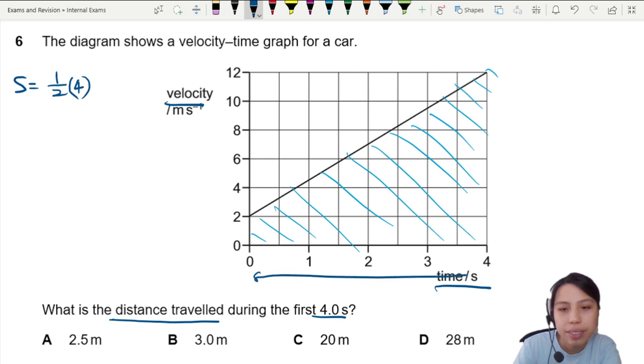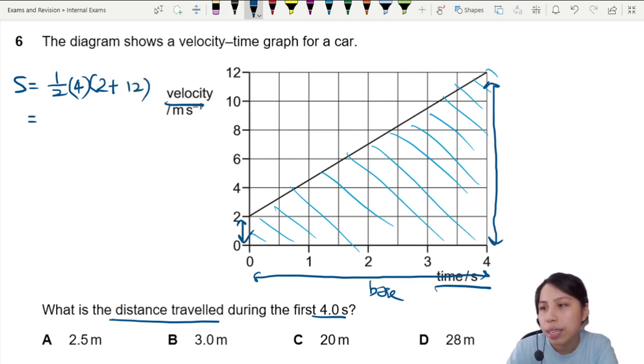We call this the base of our area, and then the two lengths 1 and 2 added together, so there'll be 2 plus 12. This working for using the area of trapezium will give us 28 meters.